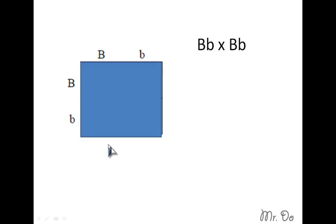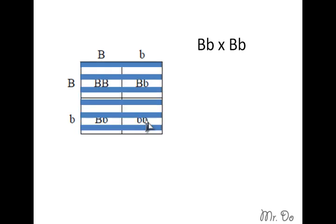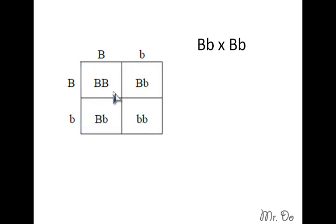So let's say what happens when you cross a big B small b with a big B small b. That means you cross two heterozygous. So here's one, you put out the alleles and here's the other. For the first one you have big B and big B. This one you have big B small b. Down here you have small b small b. So this is what you'll get.